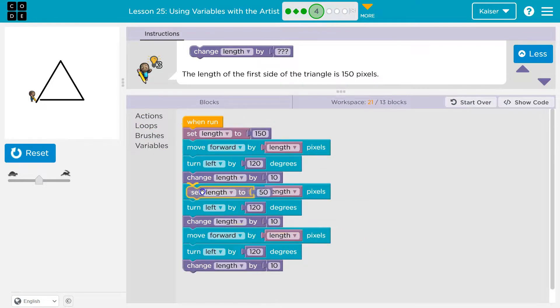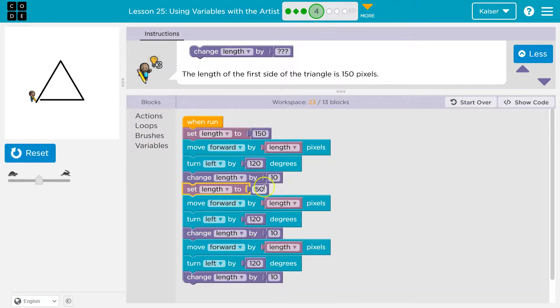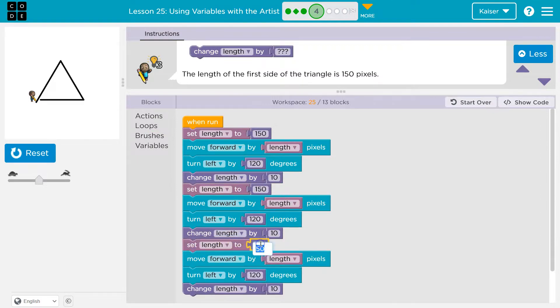I want to show you what happens if we were to do this multiple times. I'm going to set length again, right here, to 150. And then I'm going to do it again, right here, to 150.